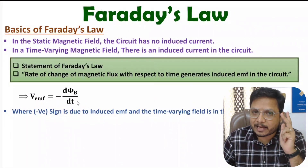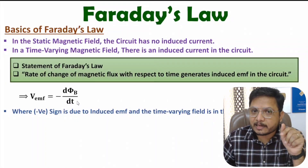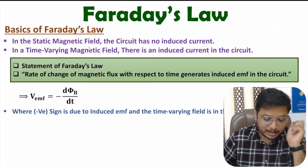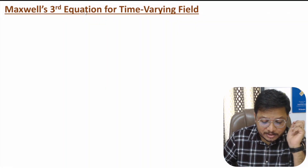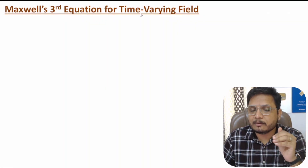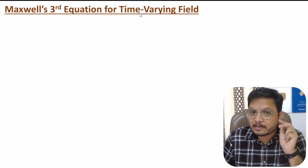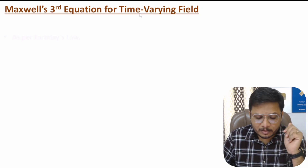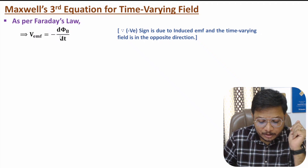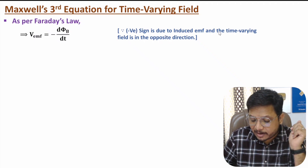One should know that magnetic flux is the surface integration of the magnetic field. Now for Maxwell's third equation for time-varying field, which is based on Faraday's Law: the rate of change of magnetic flux with respect to time gives induced EMF, with a negative sign because the induced EMF and time-varying field are in opposite directions.